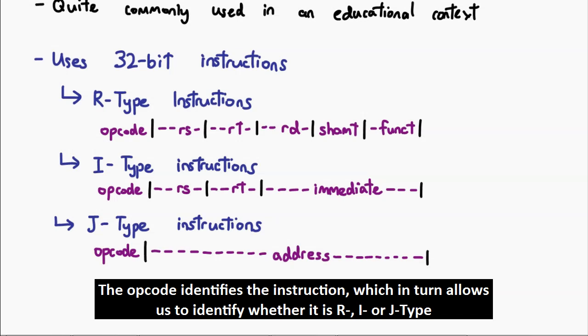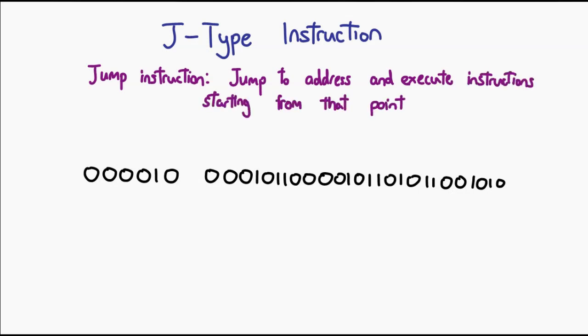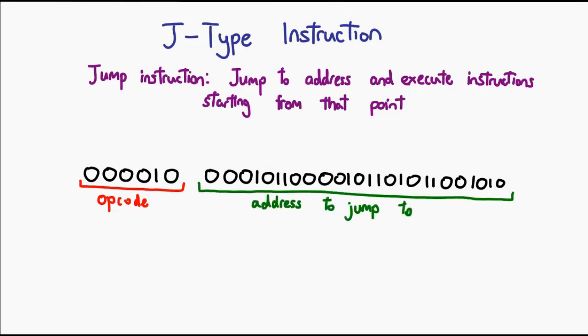So knowing that, let us move on to the first type of instruction: the J-type instruction. J-type instructions are the simplest — they're simply jumps. The first six bits refer to the opcode, and the remaining 26 bits simply specify the address to which you jump. Nothing very complicated.